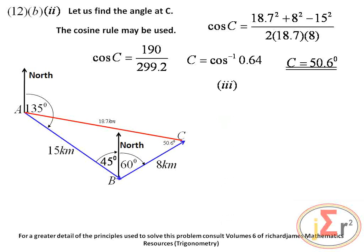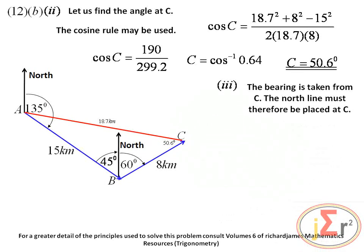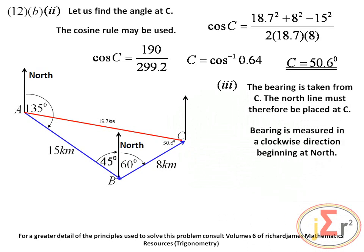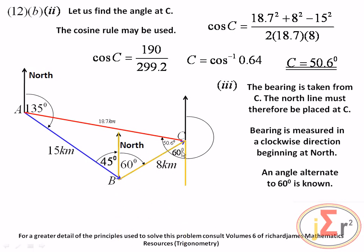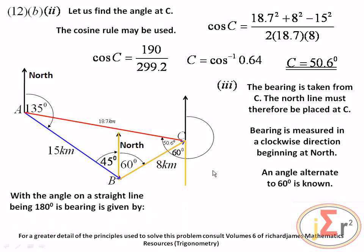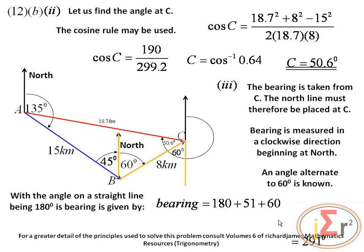The north line is placed at C and bearing is measured clockwise from north. An angle alternate to 60 degrees is known, so that angle is also 60 degrees. With angles on a straight line being 180 degrees, the bearing is 180 plus 51 plus 60 equals 291 degrees.